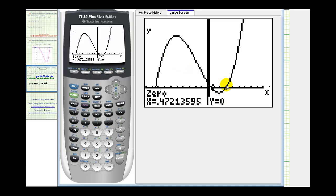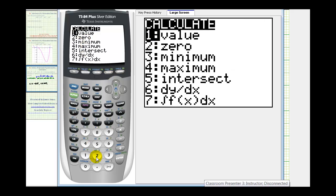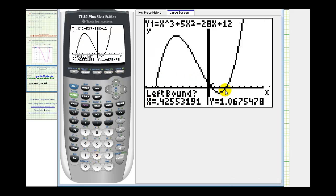And we have one more x-intercept to find, this one here. So again, we're going to press second trace, option two. Move closer to this intercept.